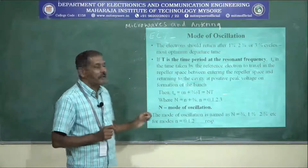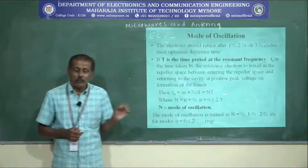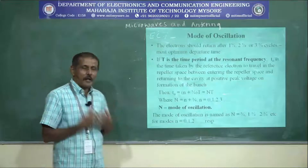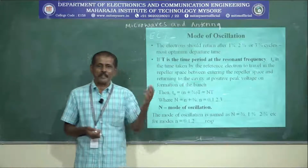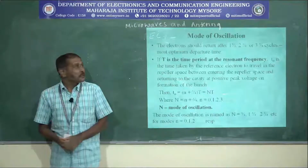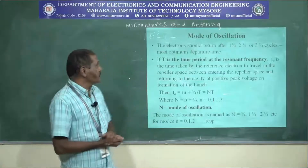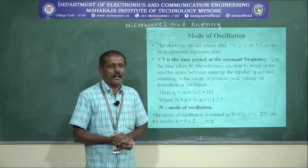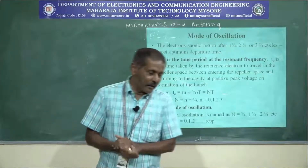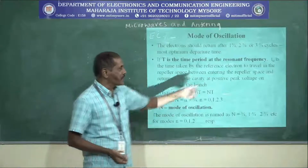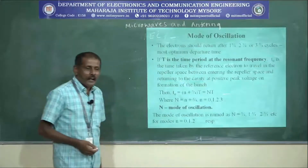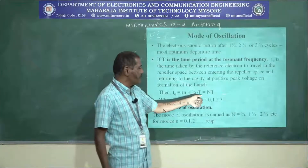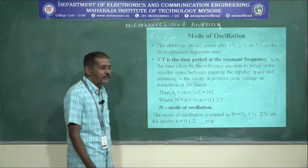This reflex klystron oscillator produces oscillations in different modes, and these different modes are generated depending upon how much time the reference electrons take to return back. The T0 is calculated by (N + 3/4) × T, where T is the time period of the resonant frequency of the cavity.